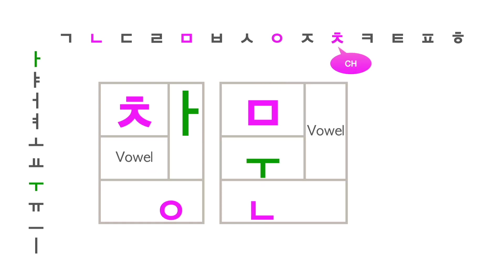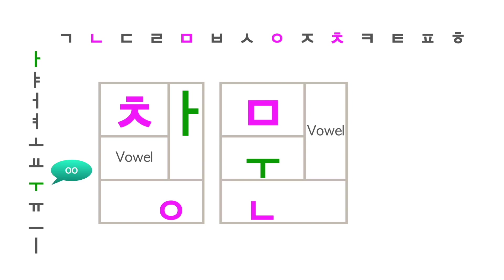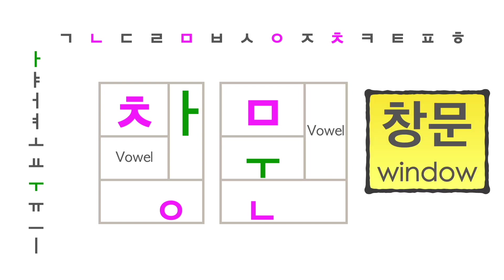To go over the consonants and vowels one more time: we have 치읒, vowel 아, lower consonant 이응, upper consonant 미음, vowel 우, and lower consonant 니은. Altogether, they make the word 창문, which means window.